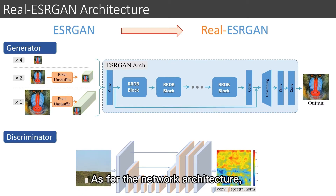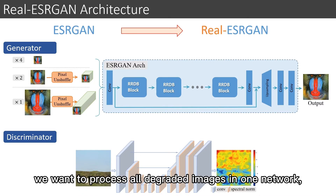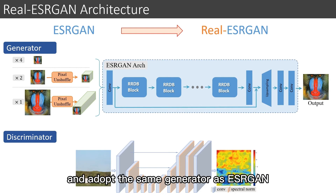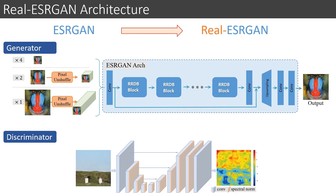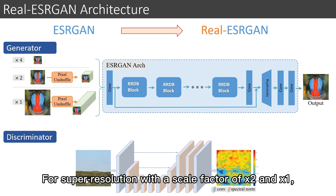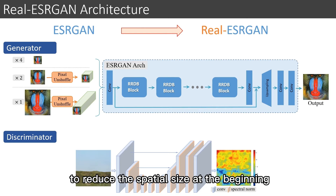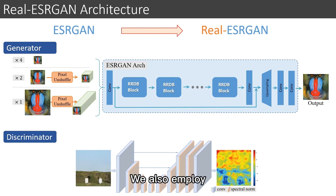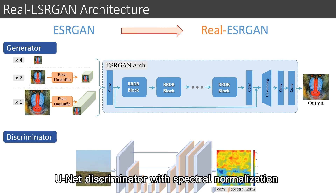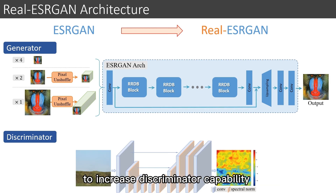As for the network architecture, we process all degraded images in one network and adopt the same generator as ESRGAN. For super-resolution with scale factors of 2 and 1, we first employ pixel unshuffle to reduce spatial size at the beginning to cut down computation. We also employ a U-Net discriminator with spectral normalization to increase discriminator capability and stabilize the training dynamics.